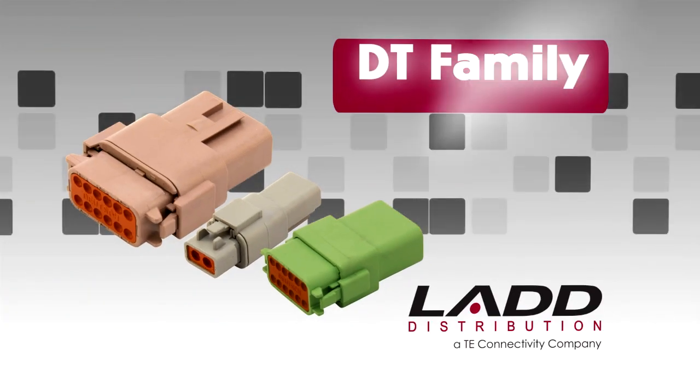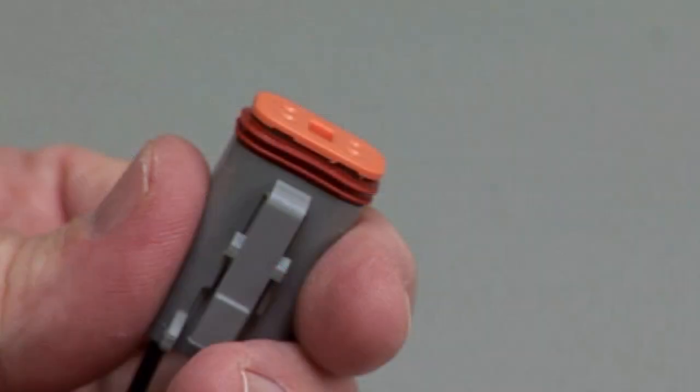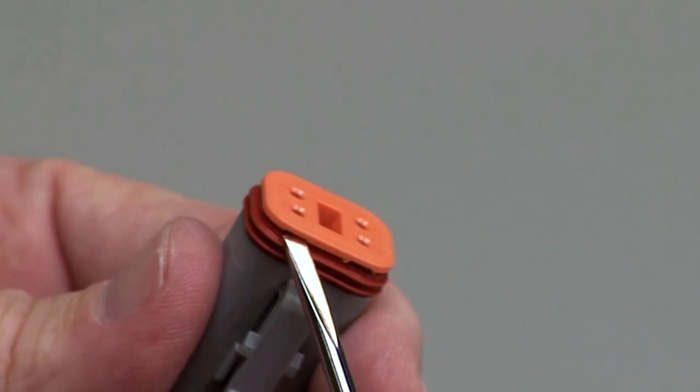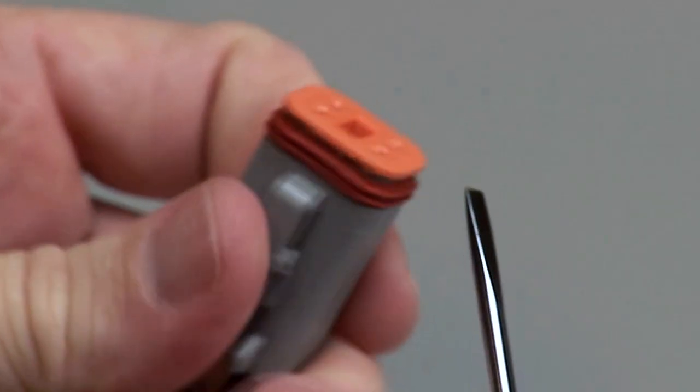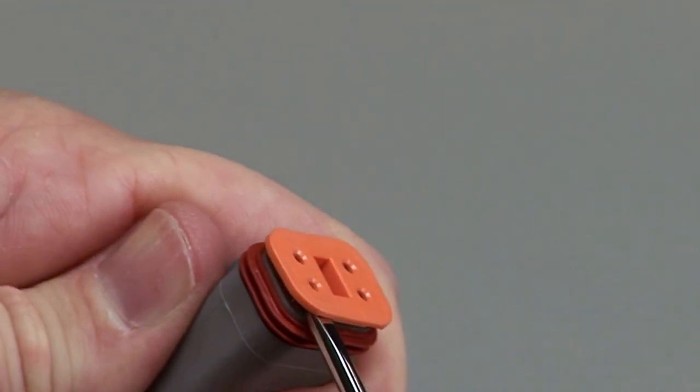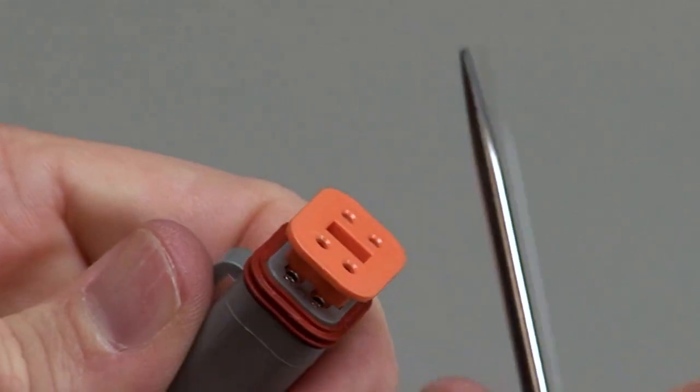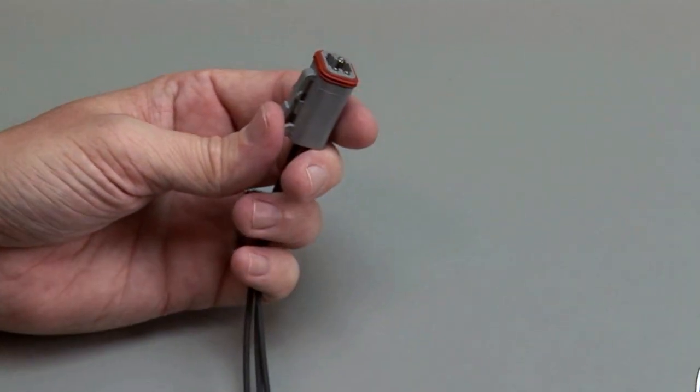DT contact removal. Connectors must be unmated to remove the contacts. Begin by removing the wedge lock with a DT-RT1 removal tool, a screwdriver, a hooked tool or a pair of needle nose pliers. Being careful not to damage the interfacial seal. Pull the wedge lock straight out.